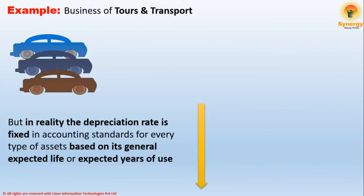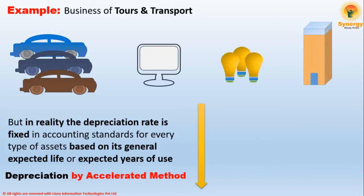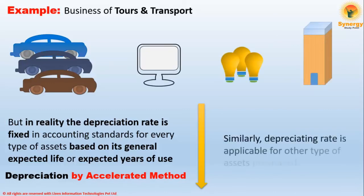In reality, the depreciation rate is fixed in accounting standards for every type of asset, based on generally expected life or expected years of use. The depreciated value is then used for the next year's accounting calculation. This is called depreciation by the accelerated method or the straight-line method in accounting. Similarly, depreciation rates are applicable for other types of assets purchased for businesses over a period of time.